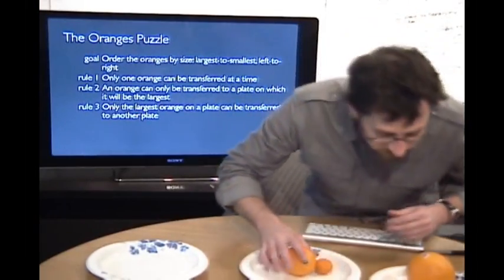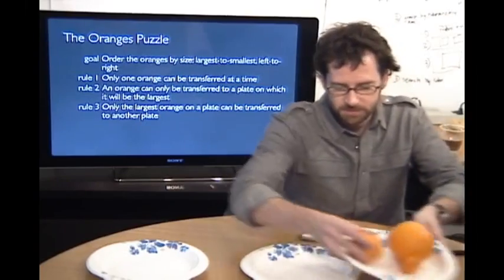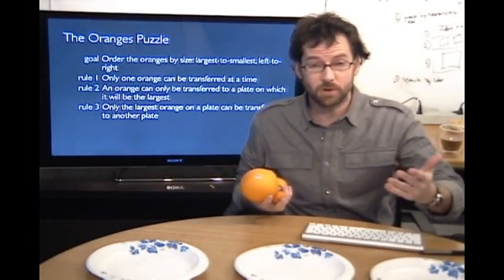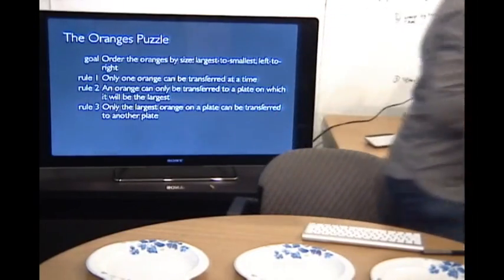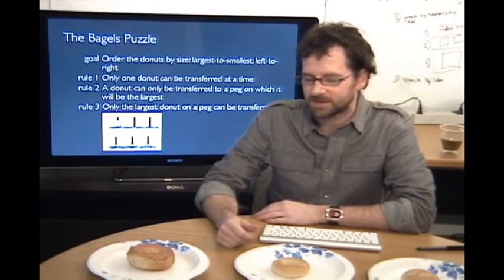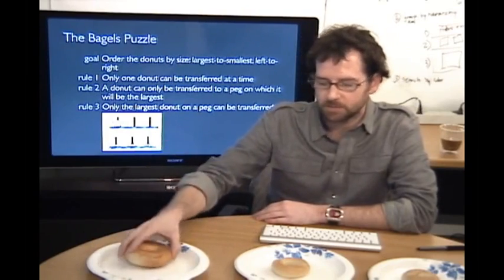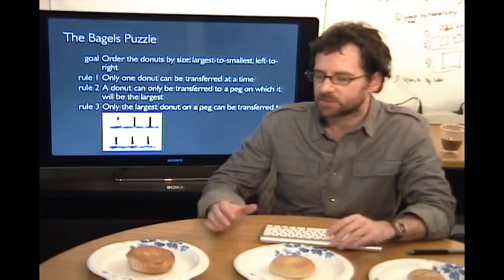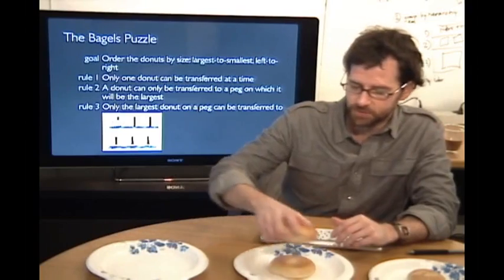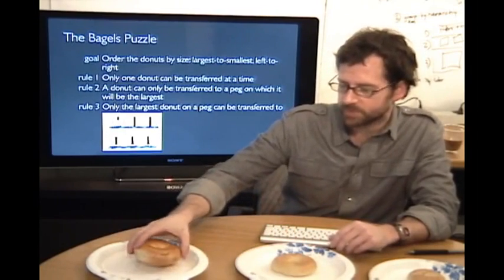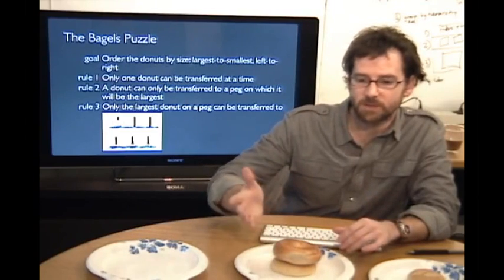There's a couple other diners who got similar orders. They all wanted bagels. They had a first course of oranges, the second course is going to be bagels. The real bagels puzzle is why can't you get a decent bagel in California? But the bagels puzzle that we have for today is a little bit different. We have our largest bagel, medium bagel, smallest bagel. So the plan is the same, except with the bagels you have the ability to stack them. You can put a larger bagel on top of a smaller bagel, but not a smaller bagel on top of a larger one. And at any point in time, just like the oranges, it needs to be the largest one on the plate.